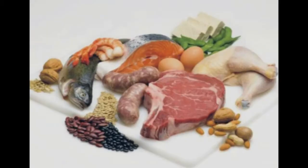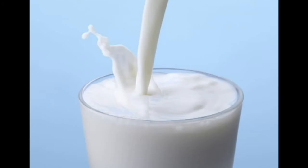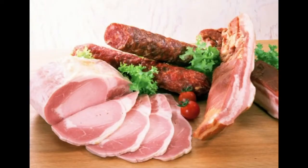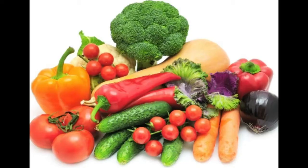Foods are classified basically into four different types. The first classification is based on origin. Based on origin, it is classified into two types: foods coming from animal sources and foods coming from plant sources. Animal sources are basically foods like milk and meat products, and plant sources basically include cereals, pulses, fruits, and vegetables.